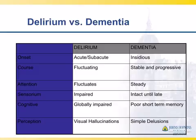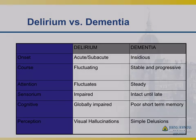With dementia, unless they're really end-stage, it's really memory that is the most significant aspect affected. Visual hallucinations are not uncommon with encephalopathic patients, even mildly encephalopathic patients. Delusions are more common in dementia patients.